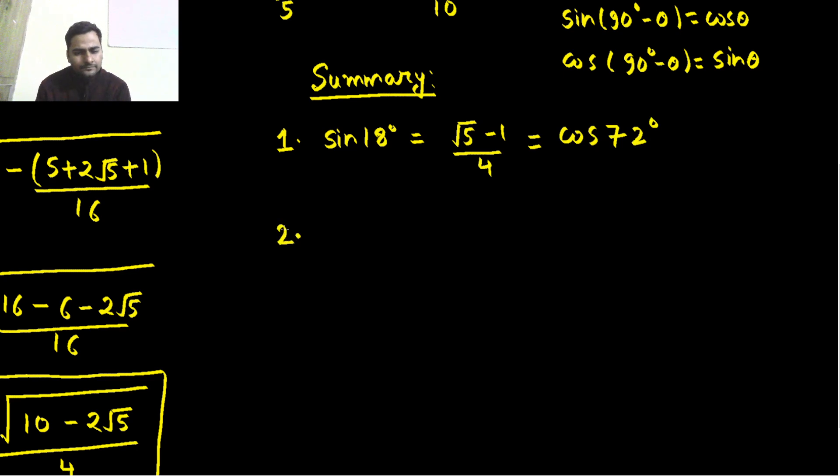Second value was cos 36 degrees, which came out to be √5+1 divided by 4. Now if you know this, you will also say sin 54. This is similar to saying sin 54. Any other value which we know?